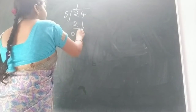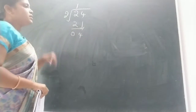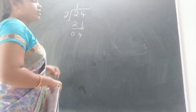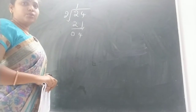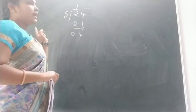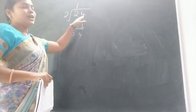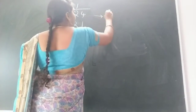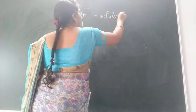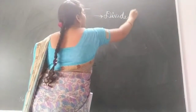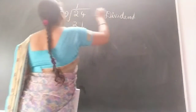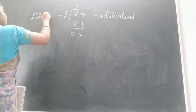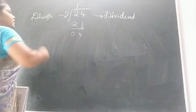So for example, this is a division: 24 divided by 2. So here, 24 is the dividend and 2 is the divisor.